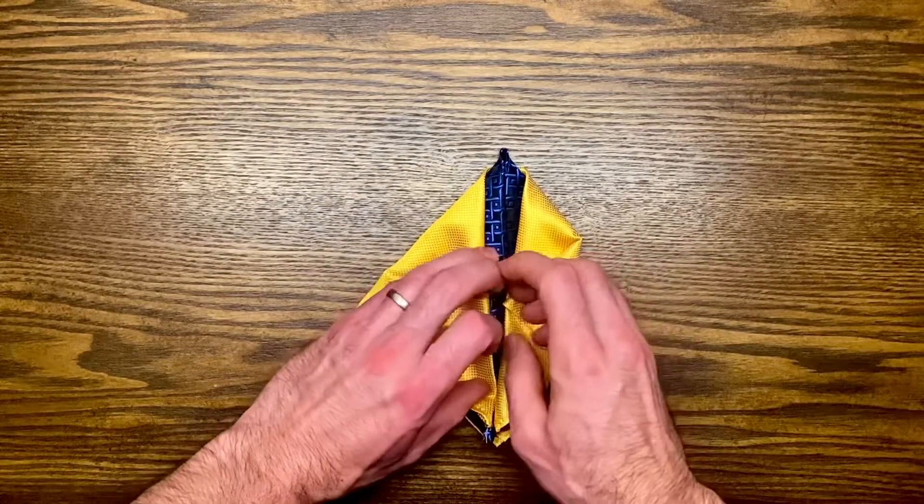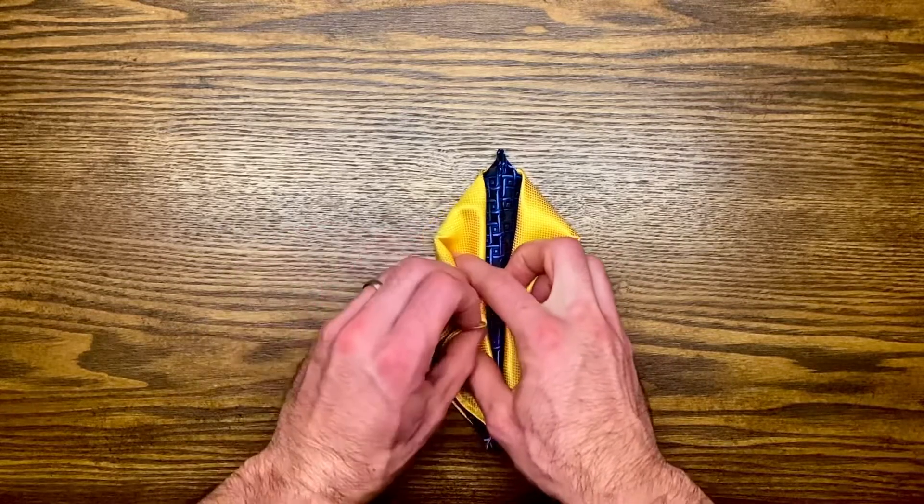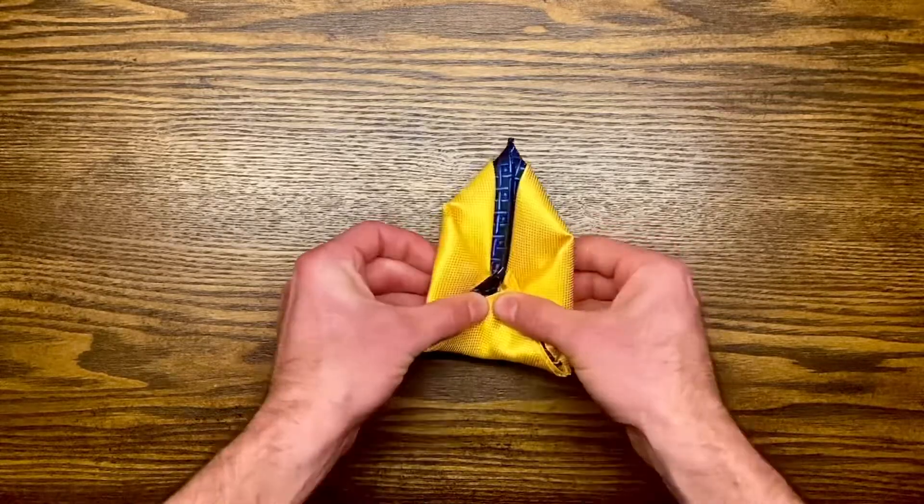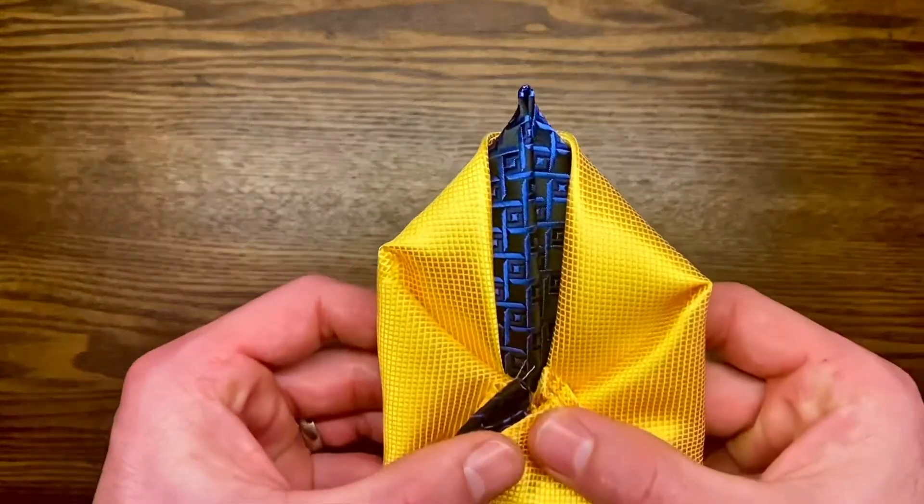Next you'll fold in your corners and the bottom, which will allow it to fit into your pocket. And there is the Double Winged Puff Pocket Square.